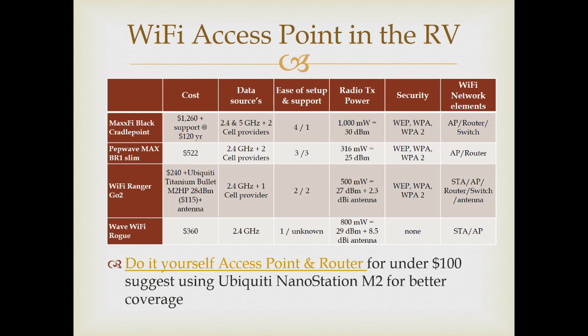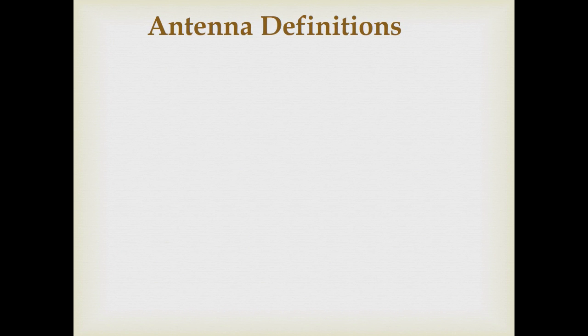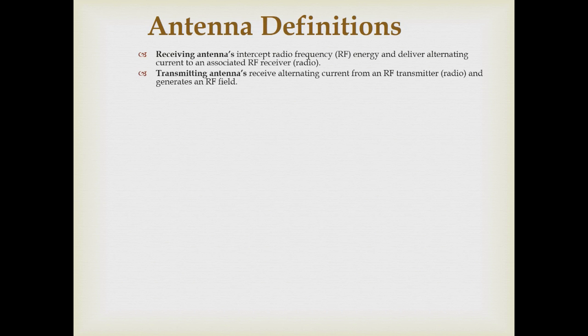Thanks to Ken Wiseman, the RV Navigator, for pointing this video out. Before we go any further, we need to talk a little bit about antenna definitions. Antennas, by their very nature, are passive devices. They don't generate any energy — they simply focus it. A receiving antenna will intercept RF energy and convert it to alternating current to pass along to a receiver. A transmitting antenna, on the other hand, receives alternating current from a radio and converts it to RF energy that's radiated out.